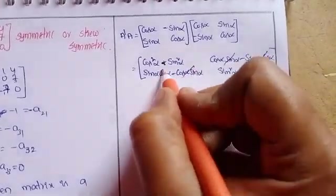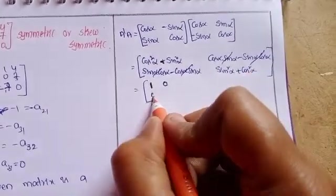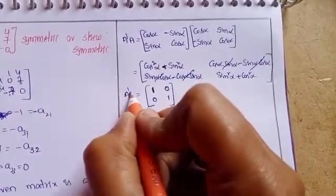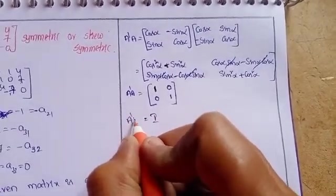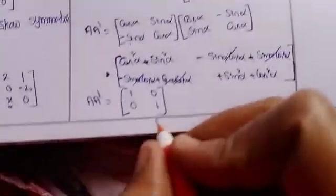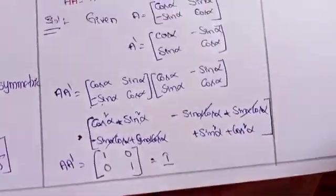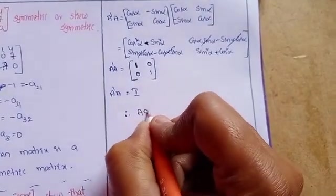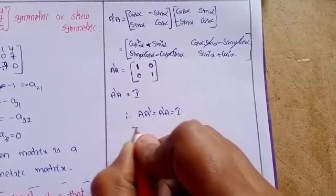The off-diagonal terms cancel. Cos squared theta plus sin squared theta equals 1, giving the identity matrix: 1, 0, 0, 1. So A transpose into A equals I, which is the identity matrix. Therefore, A into A transpose equals A transpose into A equals I. This completes the first problem.